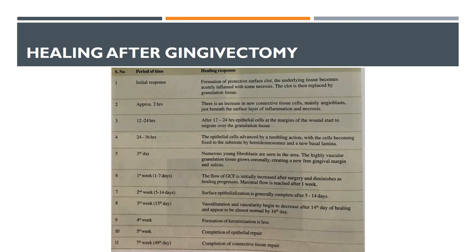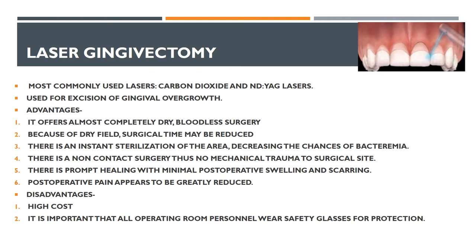Healing after gingivectomy: initial response is formation of a protective surface clot, which is replaced by granulation tissue. After approximately two hours there is an increase in new connective tissue cells. At 12–24 hours, epithelial cells at the margin begin to migrate over the granulation tissue. At 24–36 hours, epithelial cells advance by tumbling action and become fixed to the substrate. By the third day, numerous young fibroblasts are present. At week five, epithelial repair is complete, and at week seven (day 49), connective tissue repair is complete.